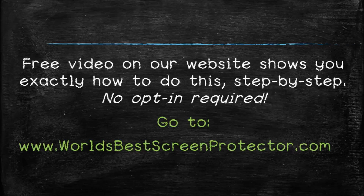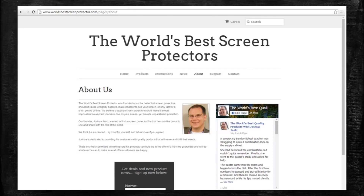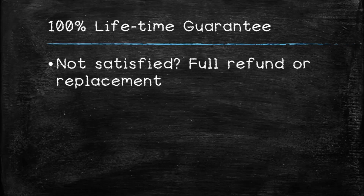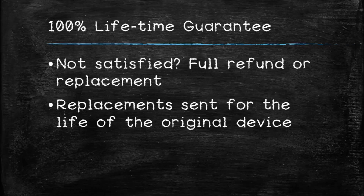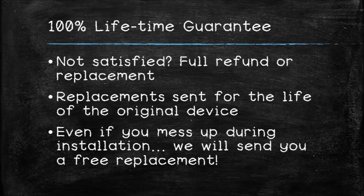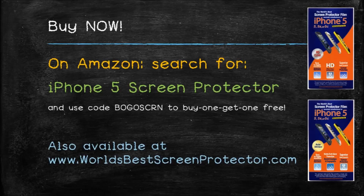If you go to our website worldsbestscreenprotectors.com we actually have an installation video there that shows you exactly how to do this. My name is Joshua Jantz with the World's Best Screen Protectors. I know it can be difficult or scary to put your hard-earned money on the line for a do-it-yourself screen protector installation. That's why all of our protectors come with a lifetime satisfaction guarantee. Even if you mess up installing the screen protector and you get bubbles and you can't figure out how to get them off, you can simply contact us and we will be happy to either give you a full refund or ship you a free replacement so you can try again. Also if our screen protectors fail to last you for the life of the device, or if they fail to satisfy you at any time in the future, simply give them back to us for a full refund or replacement. So what are you waiting for? Buy it now. Use the coupon code on Amazon to buy one get one free.